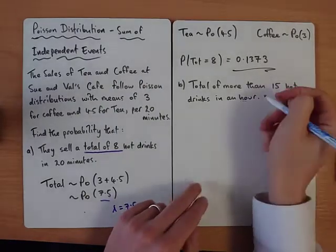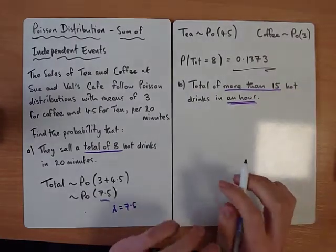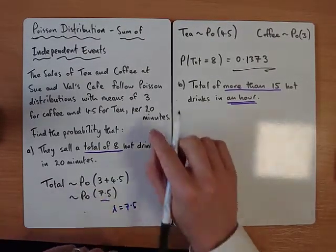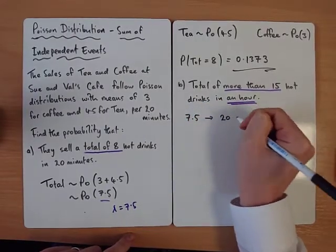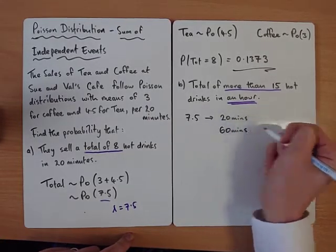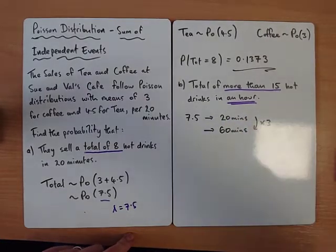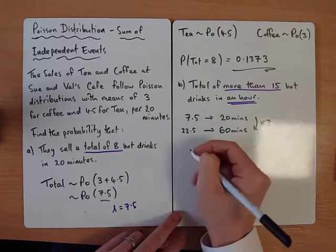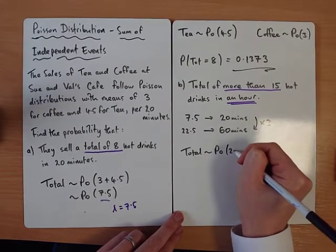The next one says total of more than 15 in an hour. We've got to be really careful here. If you change the time period, we can adjust. We're expecting total is 7.5 per 20 minutes. If we wanted an hour, which is 60 minutes, we'd have to just multiply by 3, which will give us 22.5.